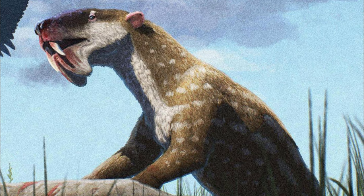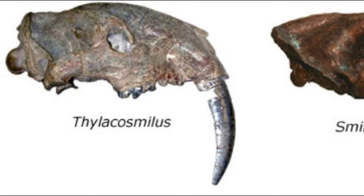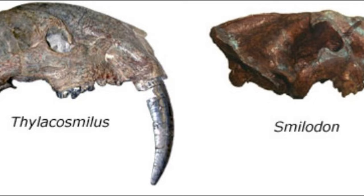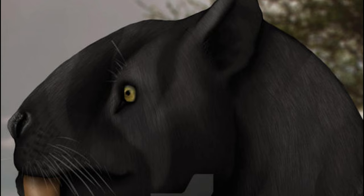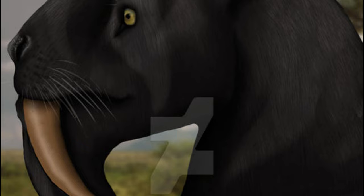While they evolved a very similar structure, there were some differences. First, the saber-teeth of Thylacosmilus grew continuously, whereas the saber-teeth of saber-toothed cats grew once and if they were broken could never grow back. Second, their canines had a shearing edge on the backside, so the teeth could be pulled backwards to cut flesh like a knife.